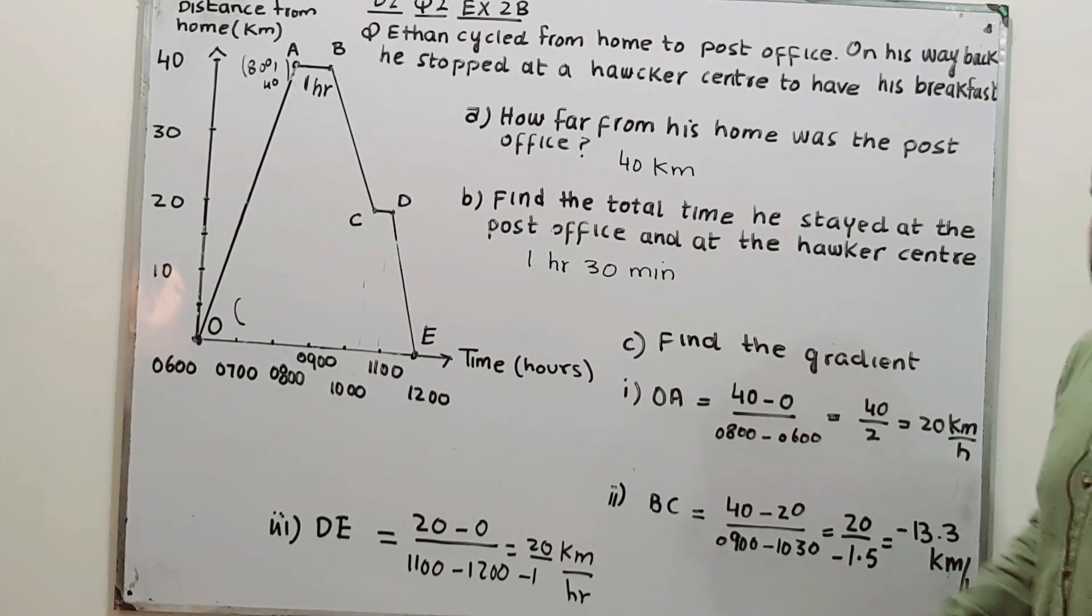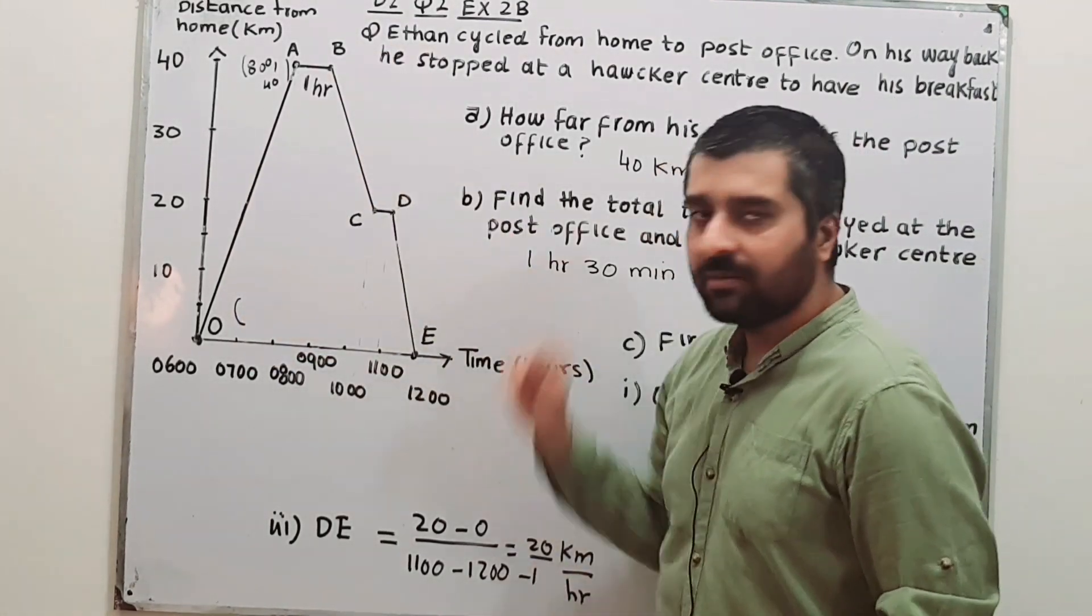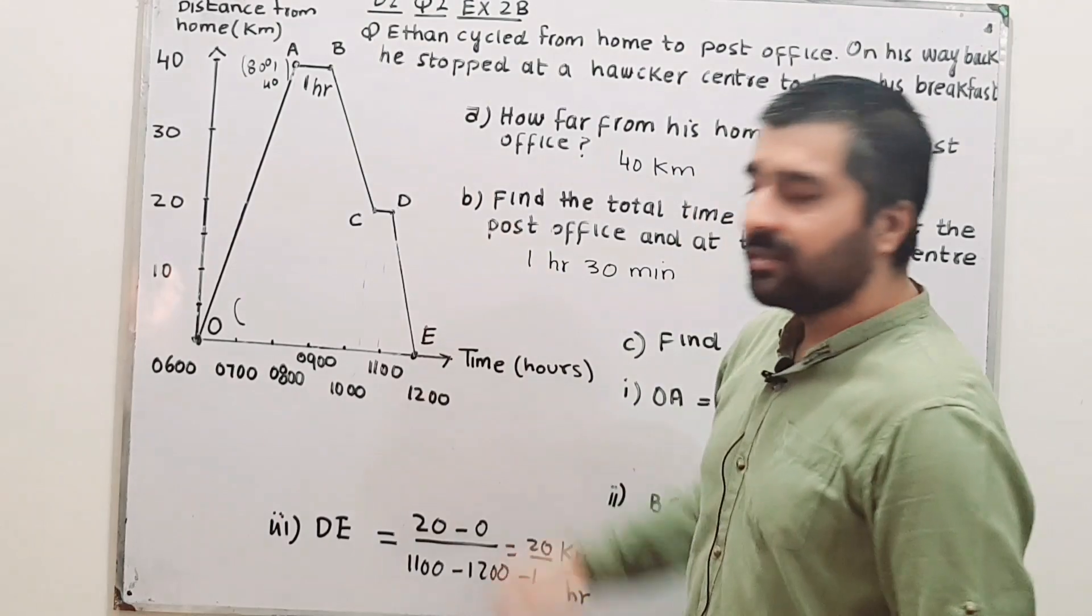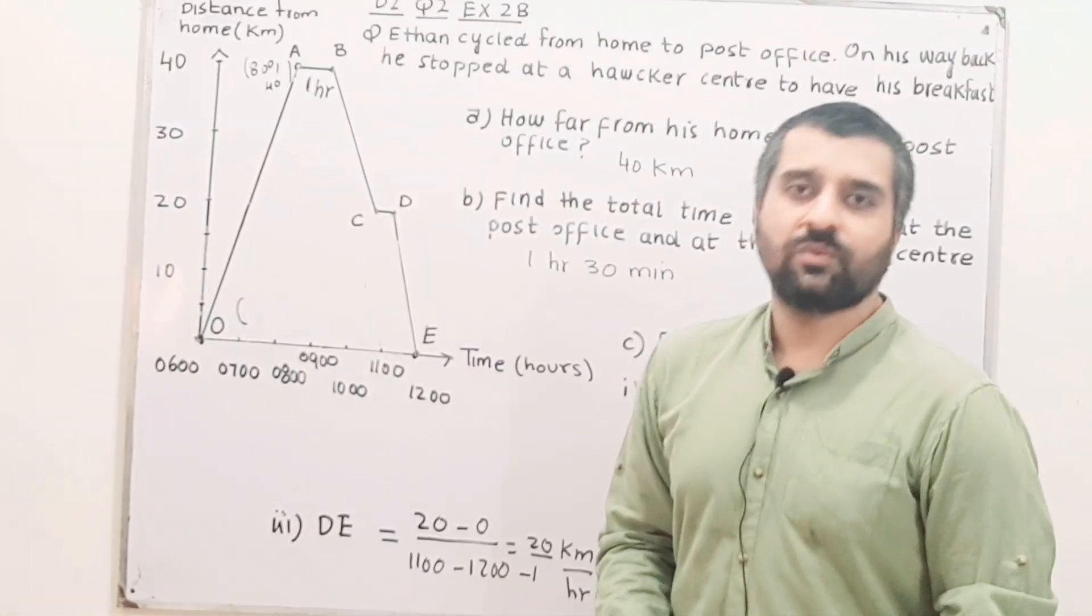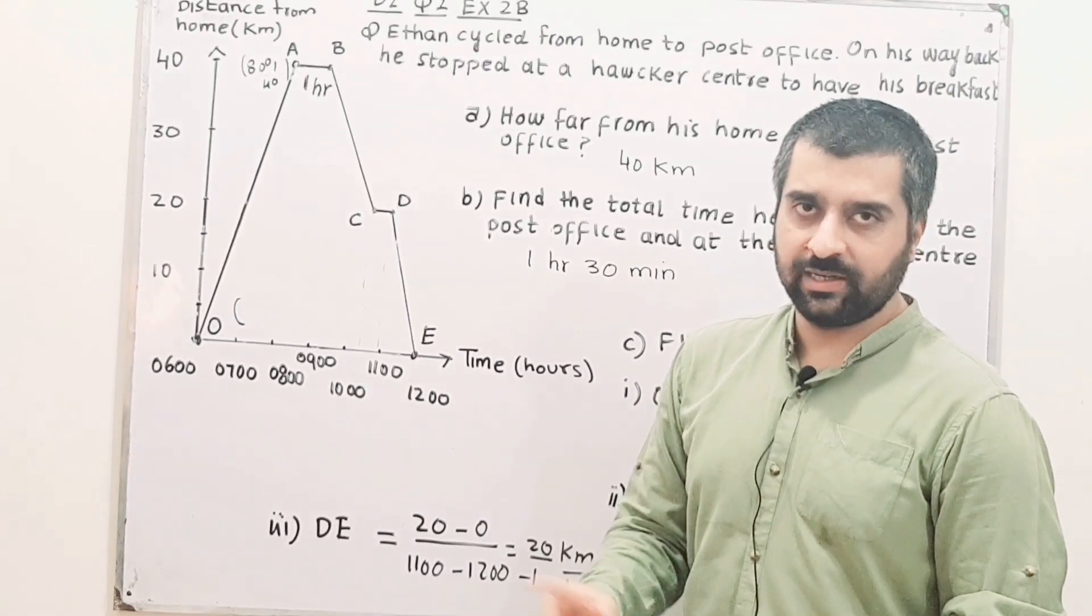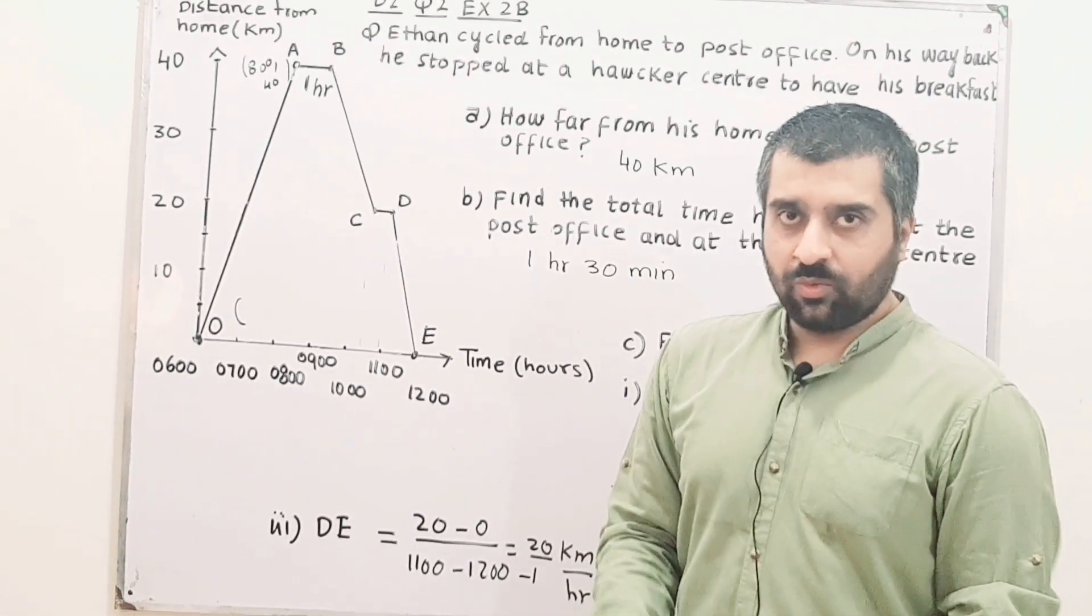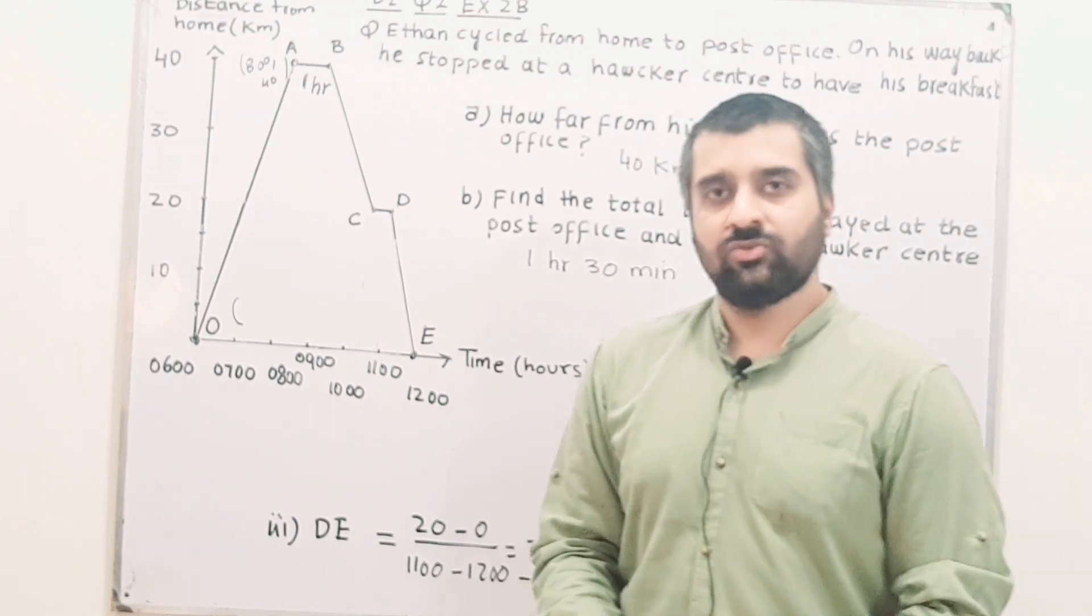Find the gradient of OA, then BD, and then DE. Gradient can be obtained using y2 minus y1 divided by x2 minus x1. Now, what is y1, x1, y2, and x2?